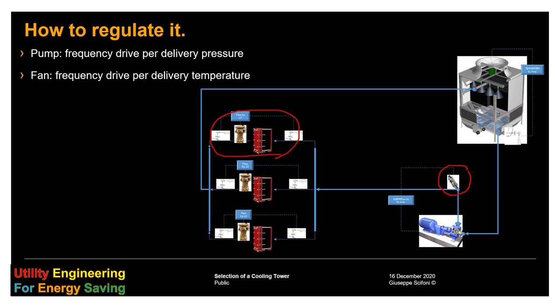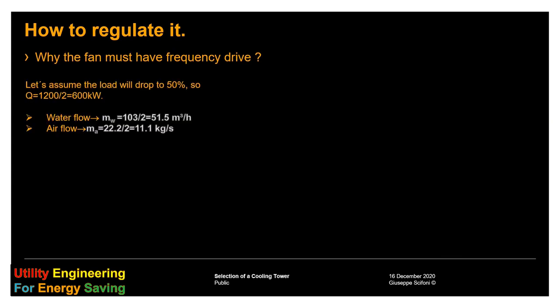What about the tower fan? Our suggestion is to use also here a frequency drive according to the delivery temperature of the water. Let's see why. Let's assume that the load drops to 50%. In this case, both the water flow and the air flow are becoming the half.